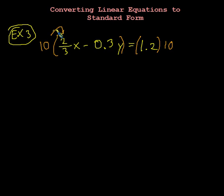So don't forget over here we've got to distribute. And when we do, we get this will be 20 over 3 times x minus 3 times y equals 12. So now this is an integer. Negative 3 is an integer. That's good.